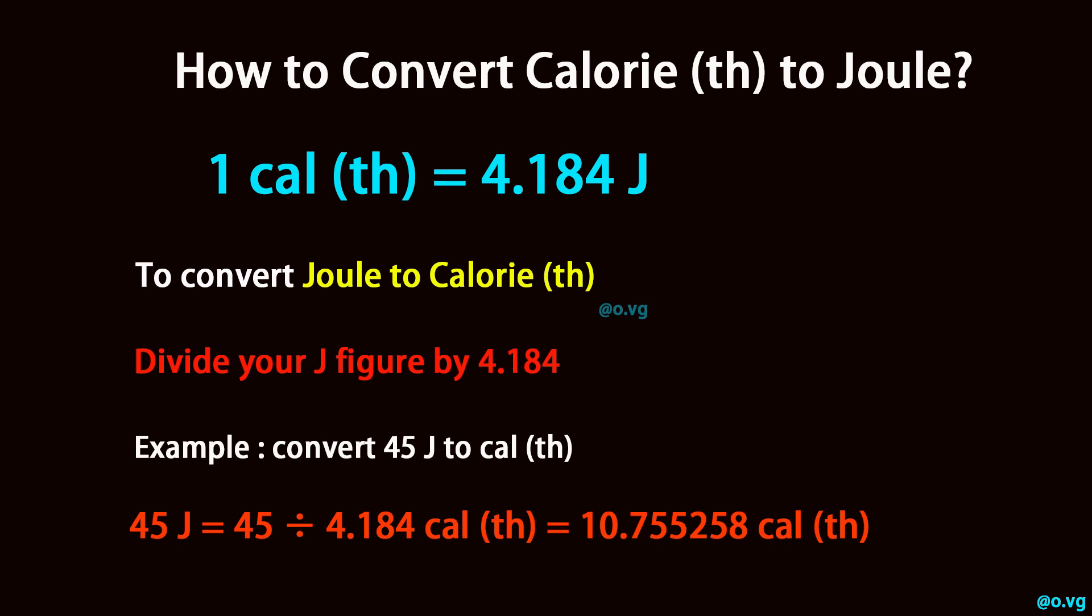Example: convert 45 joule to calorie (th). 45 joule equals 45 divided by 4.184 calorie (th) equals 10.755258 calorie (th).